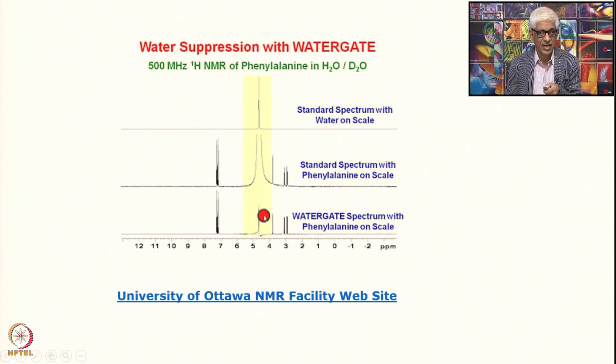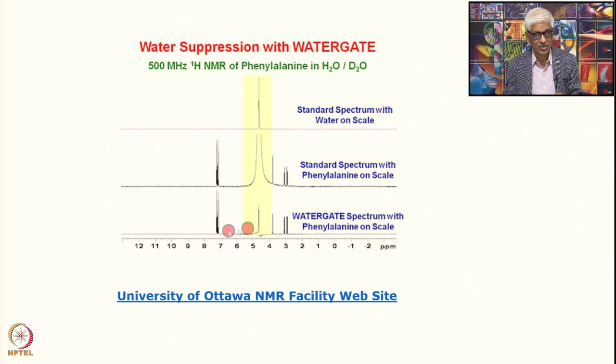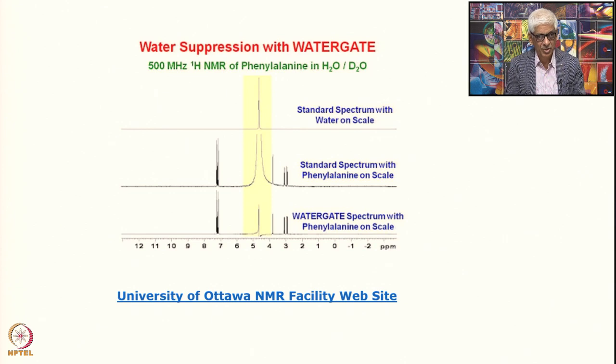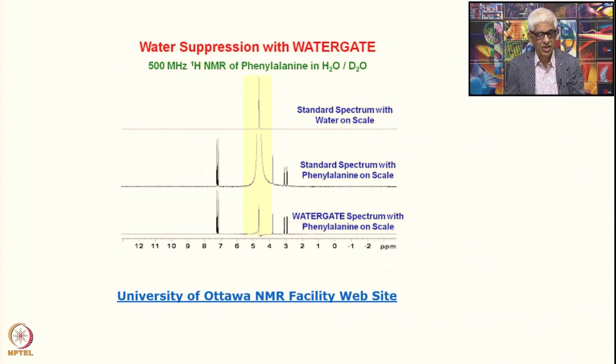Those phenylalanine signals are now stronger than the water itself. This is what is achieved by the watergate pulse sequence described last time. This example is taken from the University of Ottawa NMR facility. Many examples of watergate suppression and other pulse techniques for water suppression can be found online. This illustrates how the watergate is useful for recording good spectra.